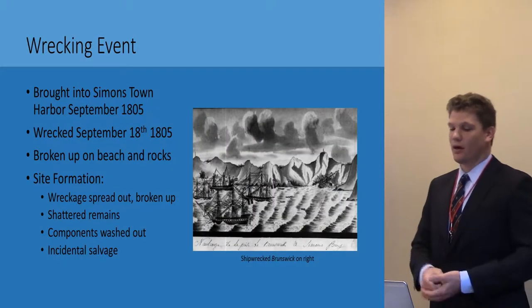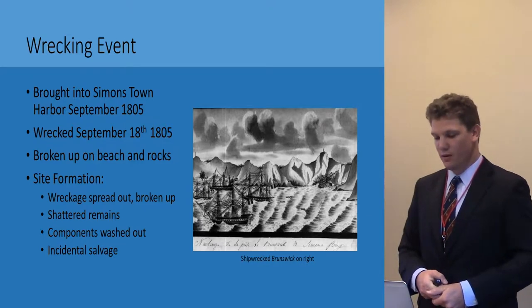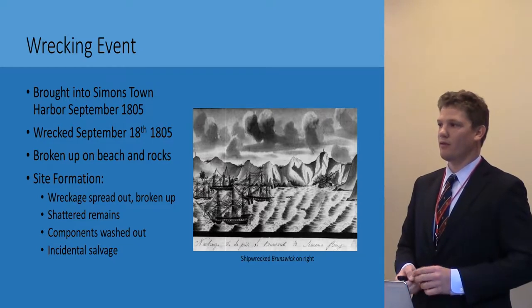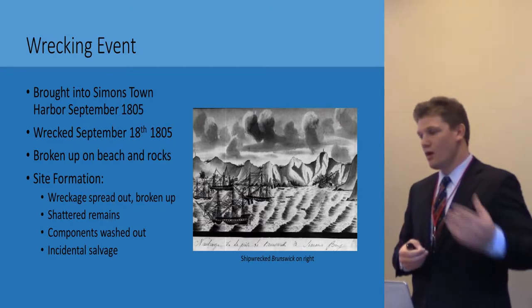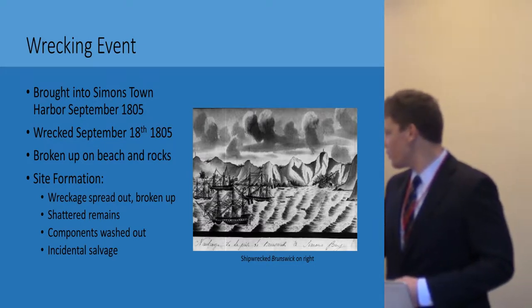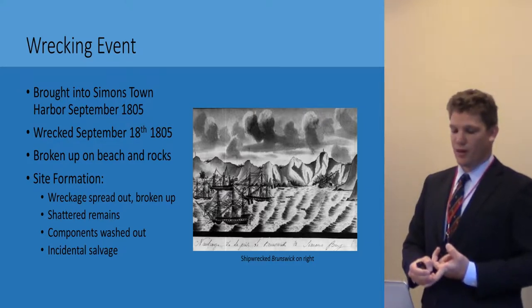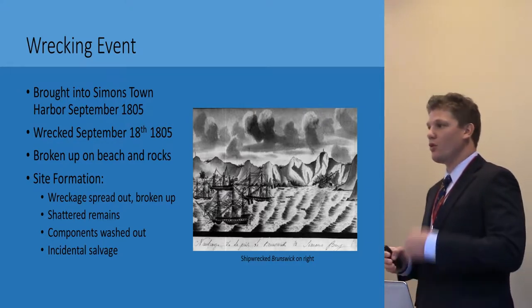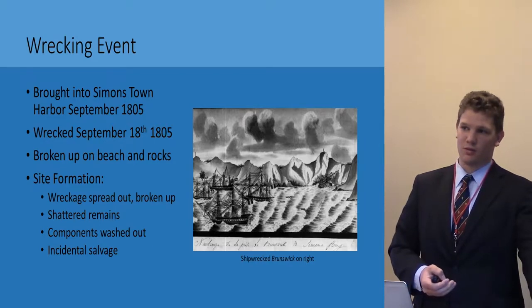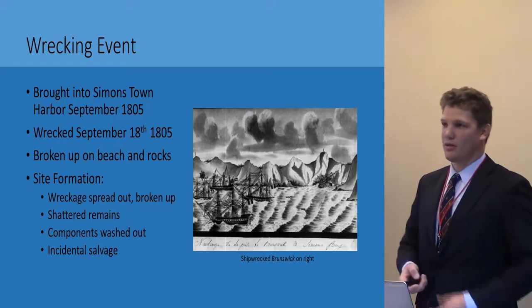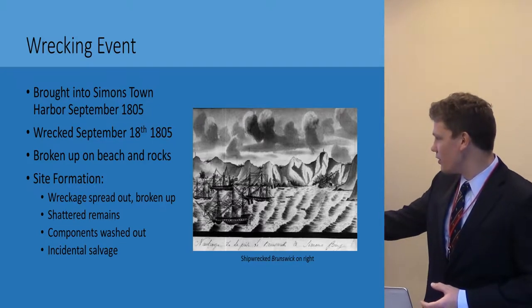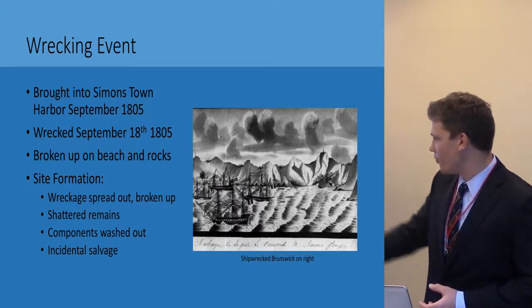A quick recap on the wrecking event. It was brought into Simonstown Harbor in September 1805. It wrecked September 18, 1805, and was pushed up onto shore when its cable broke. The likely cause of the wrecking event was a faulty hawse pipe that snapped. When it washed up on shore, it was broken up on sand and rocks. What this means for our site formation is that our wreckage or debris field is spread out and broken up — you're dealing with shattered and destroyed remains, and components that were washed out to sea or up onto the beach. When washed up on the beach, you obviously have incidental salvage as local town inhabitants come down and pick up anything. It is also possible that ships or boats out at sea at that moment picked up any of the floating wreckage.